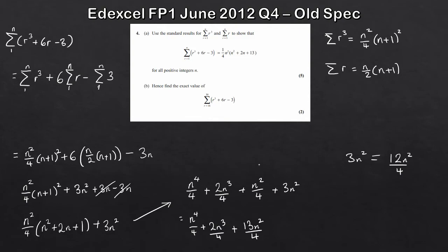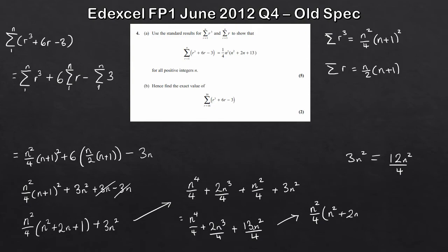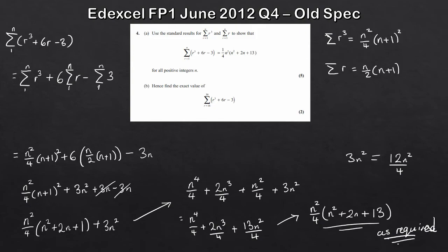Now I need to combine the n squared over 4 and the 3n squared. Converting 3n squared to the same denominator gives 12n squared over 4, and adding n squared over 4 gives 13n squared over 4. So altogether: n to the 4 over 4, plus 2n cubed over 4, plus 13n squared over 4. Now I factor out n squared over 4, which gives n squared over 4 times n squared plus 2n plus 13. That matches the required expression — as required, for the 5 marks.